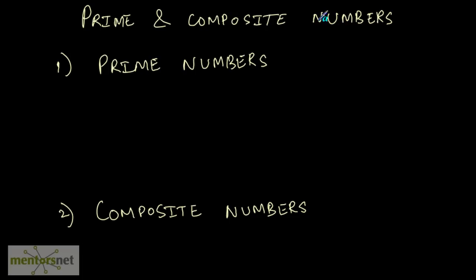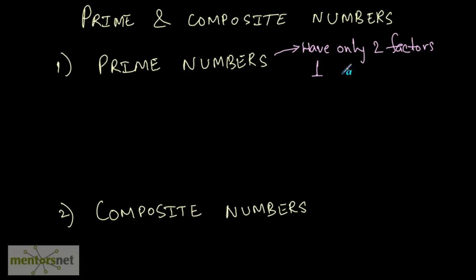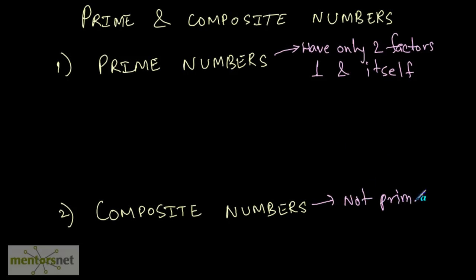A prime number is a number which has only two factors. And those two factors are the number 1 and the number itself. Composite numbers are those numbers which are not prime — the numbers which have only two factors, being 1 and itself, are prime numbers.